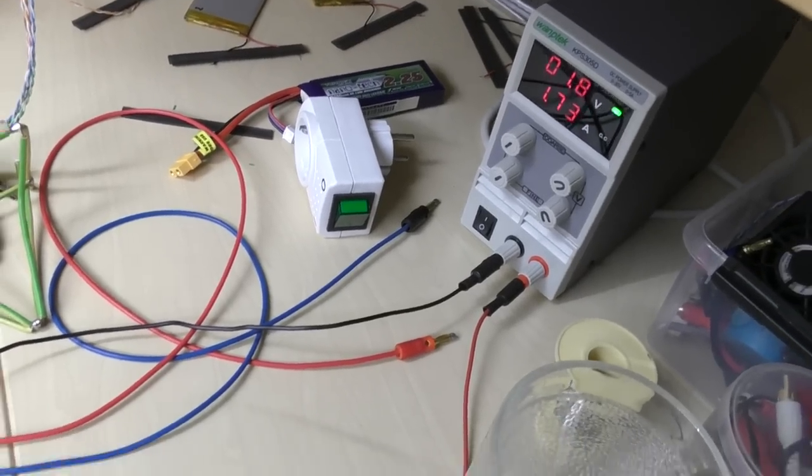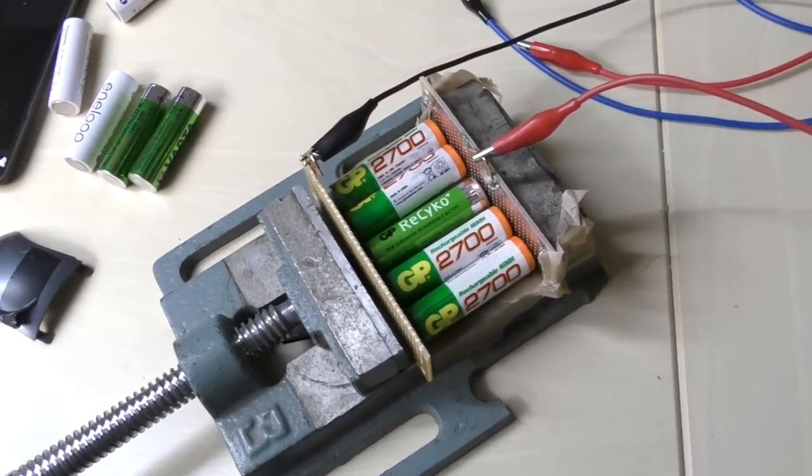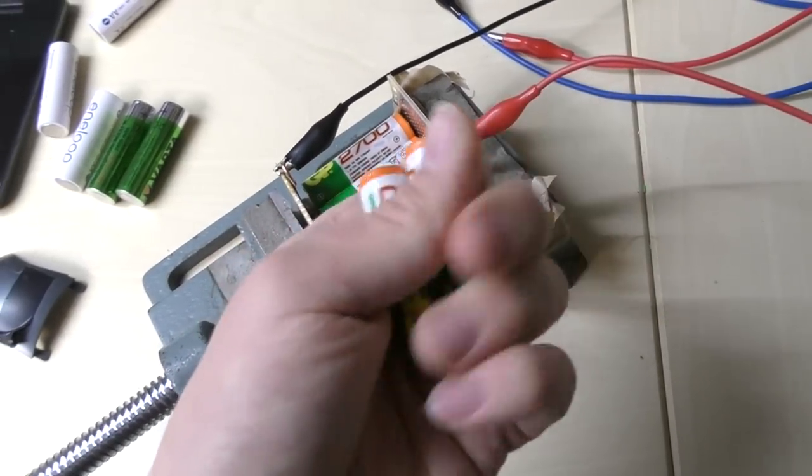To get batteries in, you just undo your vise and pick them out. You go by temp, and these are done. Those guys there still need some charging.